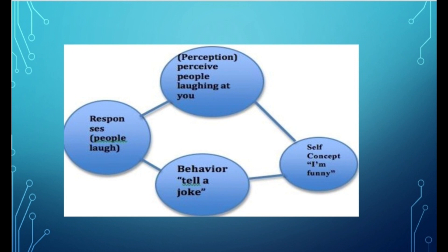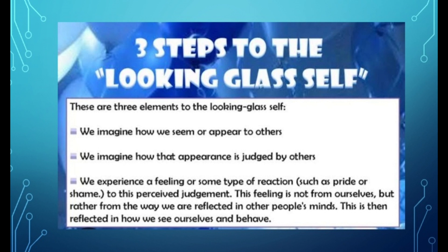Self concept: 'I am funny۔' سب سے پہلے behavior — tell a joke — ایک person joke کہے گا، پھر response آئے گا: people laugh۔ پھر وہ perceive کرے گا: people laughing at you — کہ لوگ ہنس رہے ہیں — اور پھر وہ concept بنا لے گا کہ 'I am funny۔' جس طرح لوگ اس کے لئے mirror ہیں، mirror اسے کہہ رہا ہے کہ لوگ اس کی بات پہ ہنس رہے ہیں — تو اس کا مطلب ہوا کہ وہ funny ہیں۔